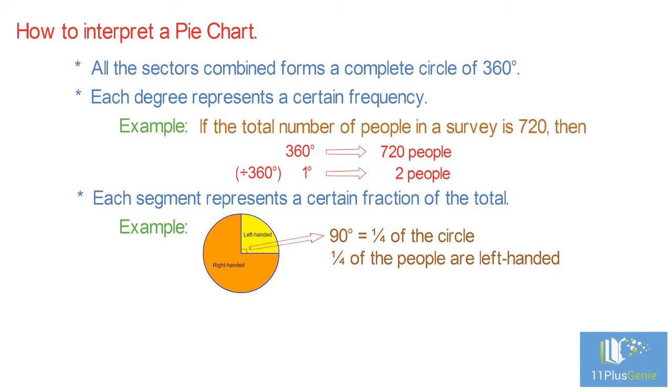A useful proportionality to remember is angle of slice divided by 360 degrees equals frequency divided by total population.